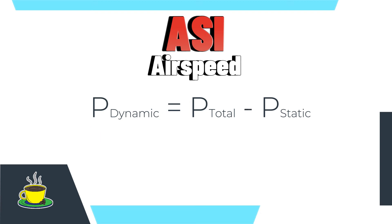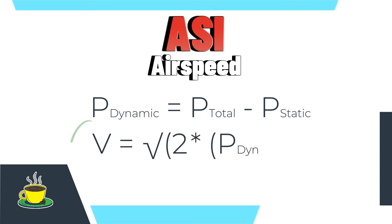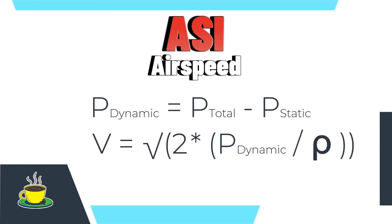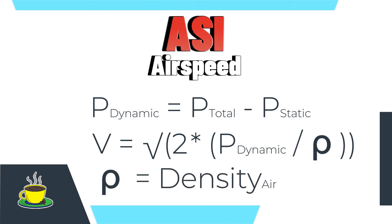Now to get the airspeed, known as V, it will be the square root of two times the dynamic pressure divided by the air density, and that gives you your aircraft speed.